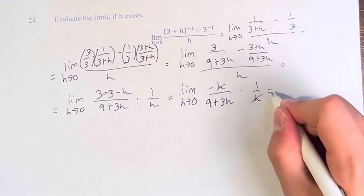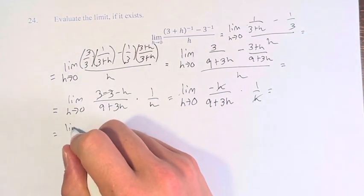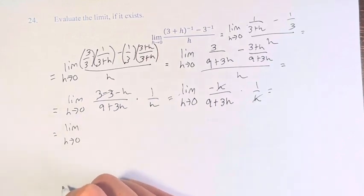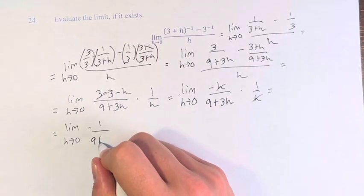The h's cancel, this is just equal to the limit as h approaches 0 of negative 1 over 9 plus 3h.